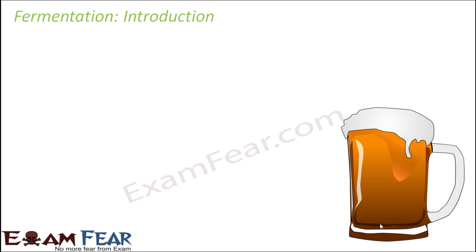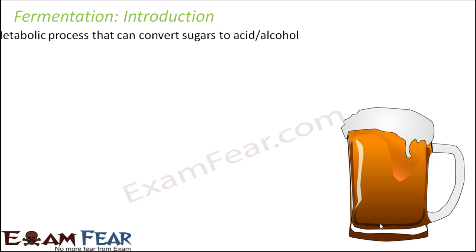The name fermentation must be quite familiar to you. Whenever you talk about fermentation, you would have heard of the process of fermentation being used to make wines, to make beers, to make yogurt - fermentation plays a role in all of these. It is a metabolic process that can convert sugars into acids or alcohols. The process of fermentation as such is a natural process; however, these days artificial processes have also been brought into the picture in order to use it commercially.